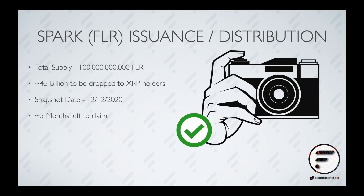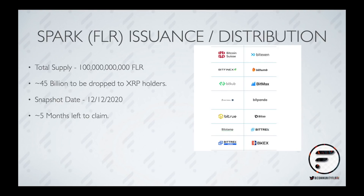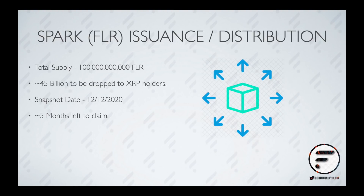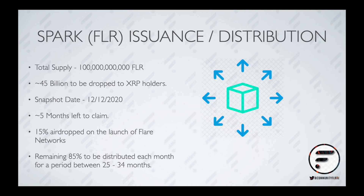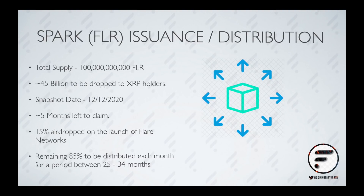If you were holding your XRP on a participating exchange at the time, you can sit back and let the exchange handle everything. A list of participating exchanges will also be included in the description of this video. The initial distribution of Flare Network's SPARK token will commence upon the launch of the network and will consist of 15% of your allocated SPARK. The remaining 85% will be distributed over a minimum of 25 months and a maximum of 34 months, equating to roughly 3% of your total allowance each month until the end of the distribution period.